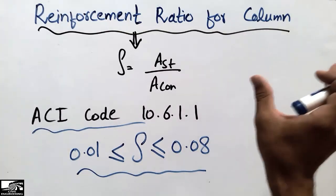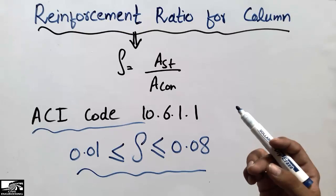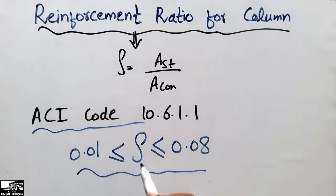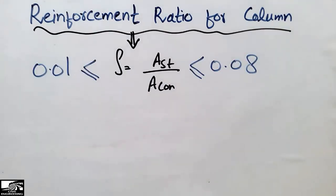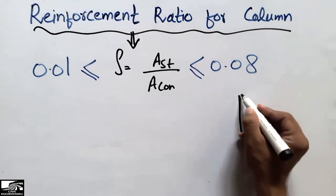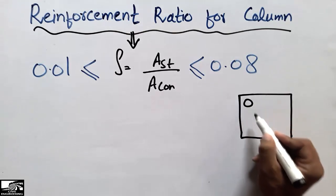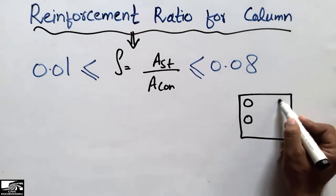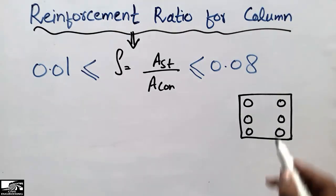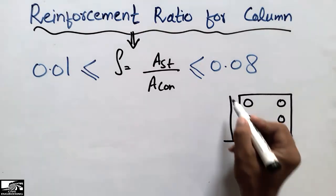Now I will explain this ratio by taking one example. I will solve the example and show you how we calculate the reinforcement ratio for a given design column and how it should fall within this range. Let's take an example: in a design column, we place the steel bars as shown, and this is our reinforced concrete column.